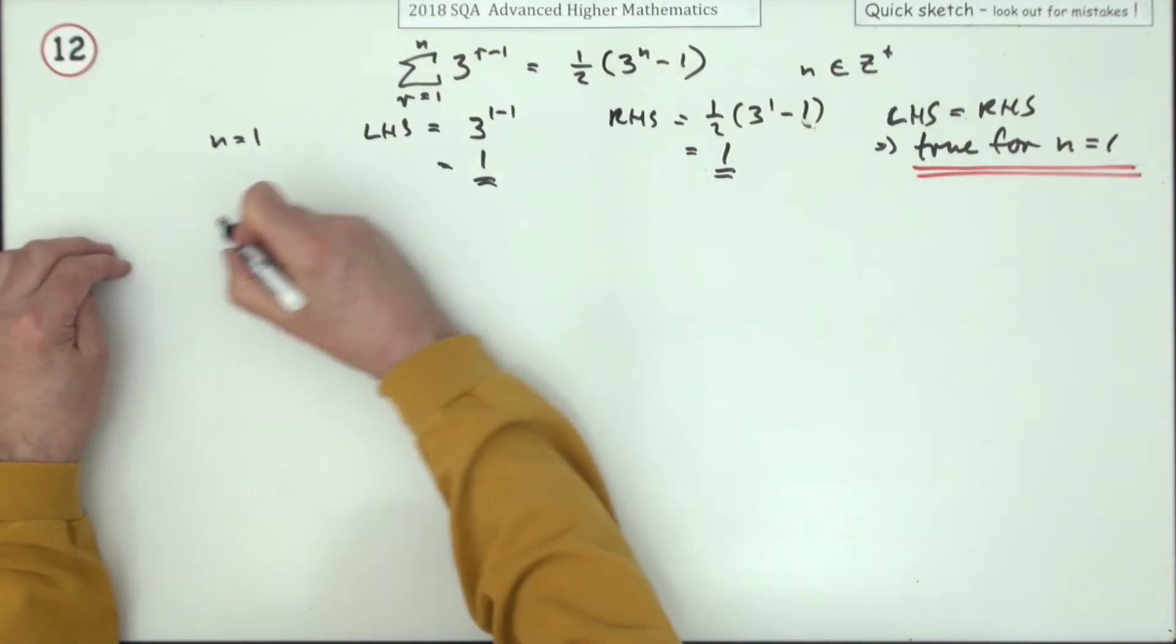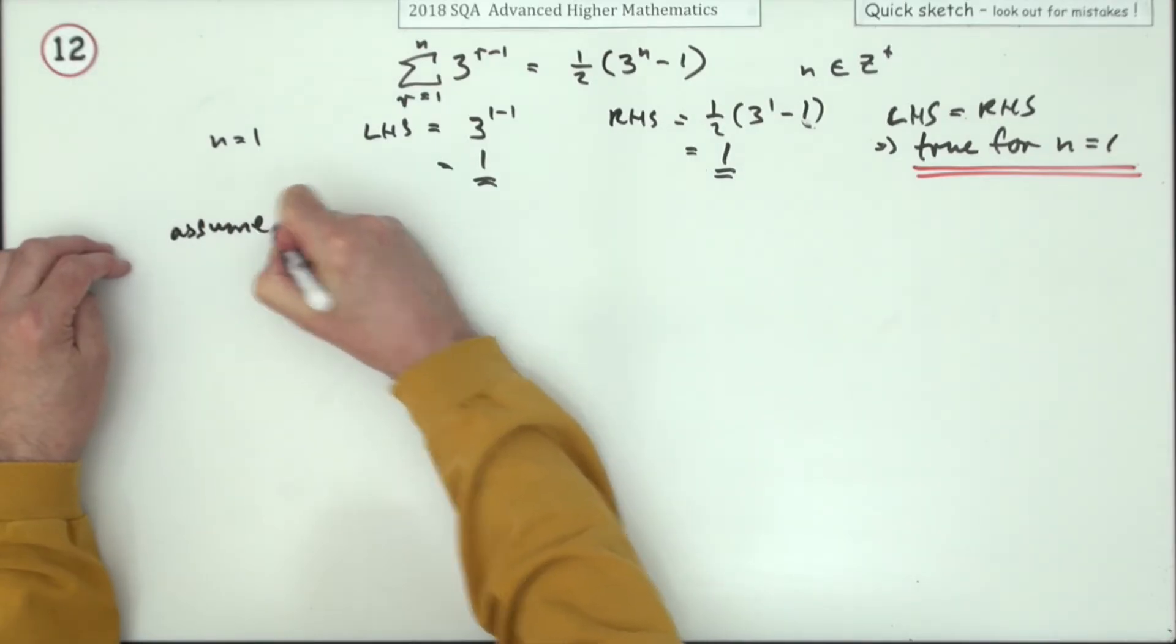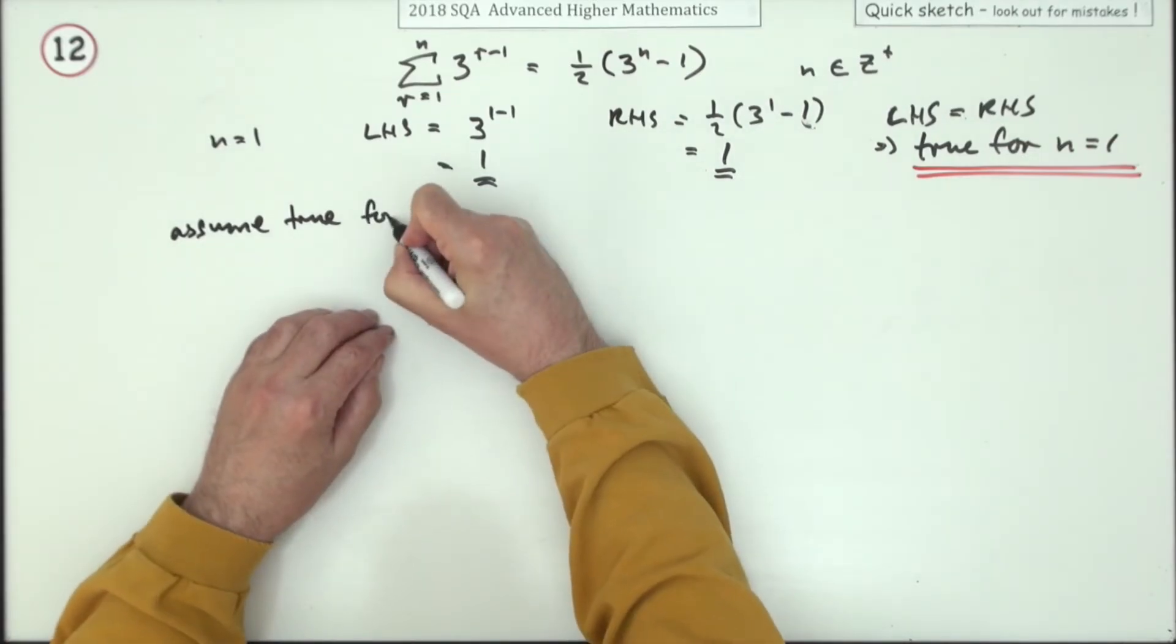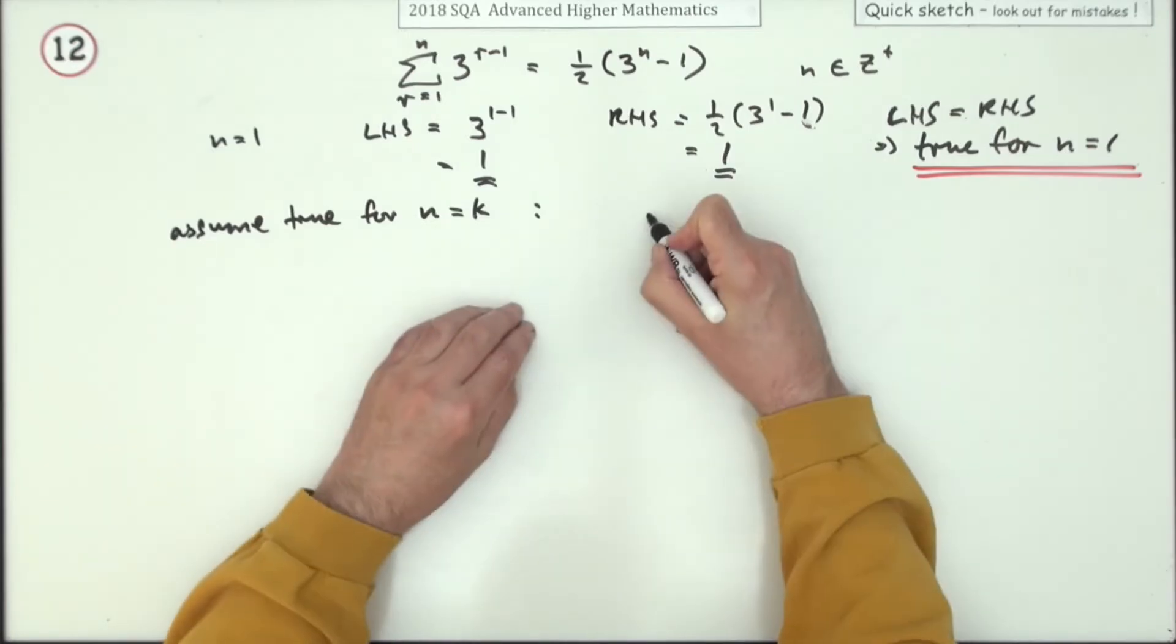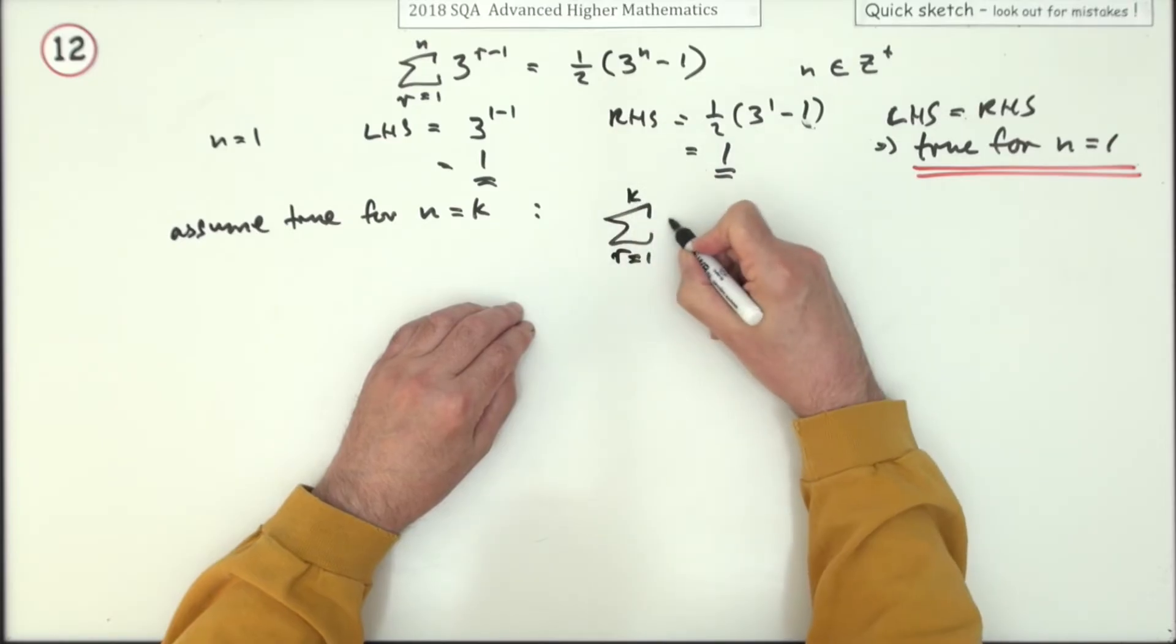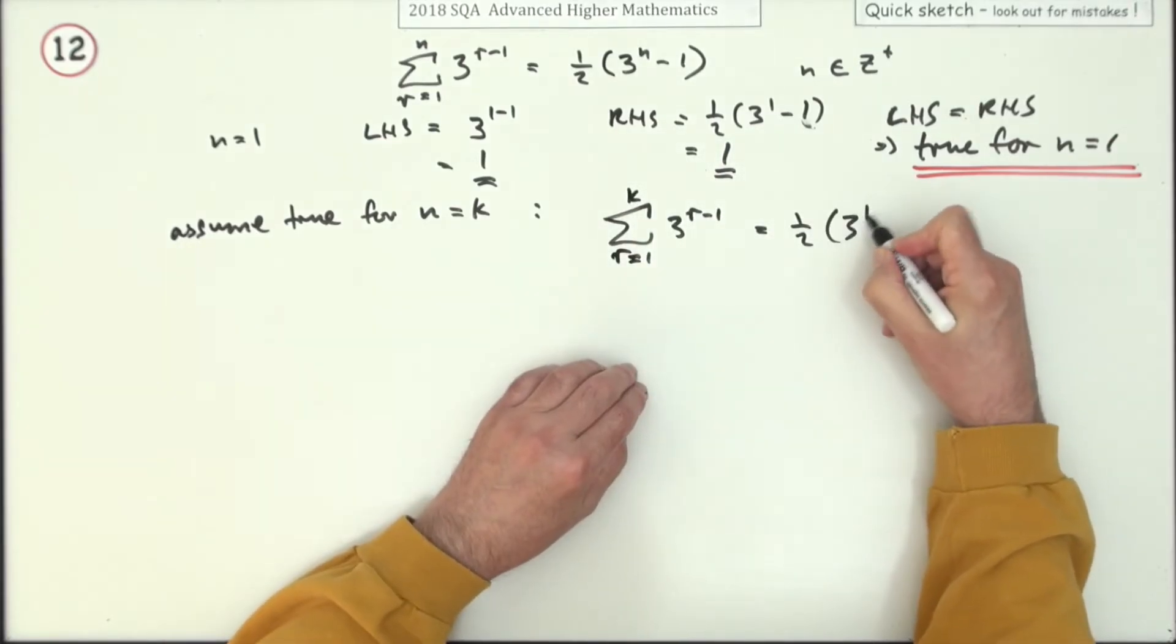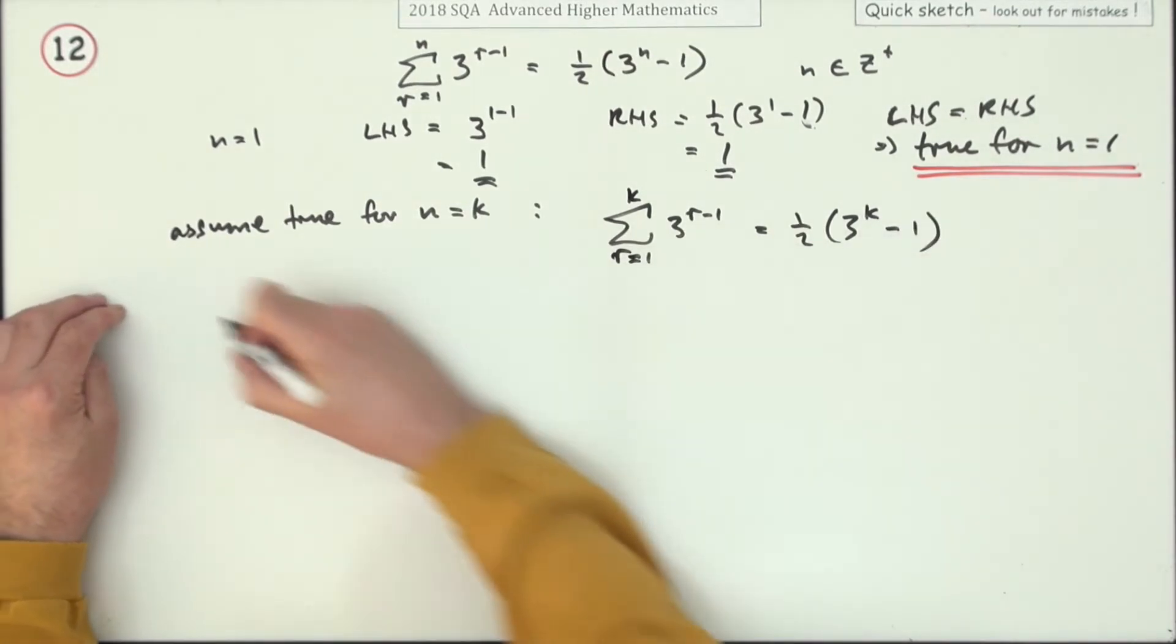Now comes the inductive hypothesis. So you're going to assume it's true then. It was okay at 1. Assume it's true at some random point. Assume it's true for n equals k. Well, if that's the case, then the sum for r equals 1 to k of 3^(r-1) should be a half of 3^k minus 1. Now you'll be calling that back in.